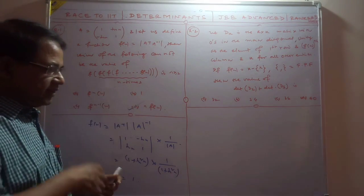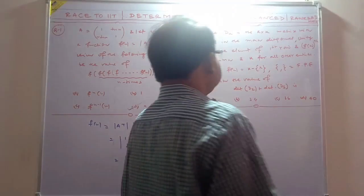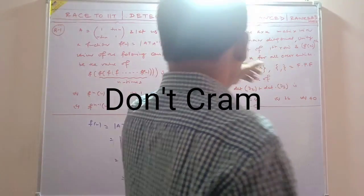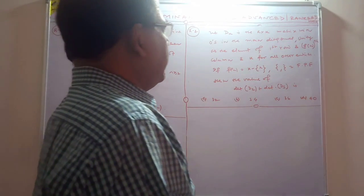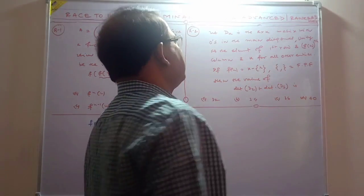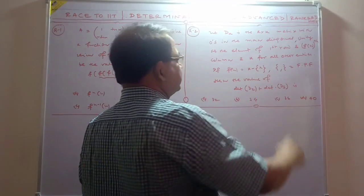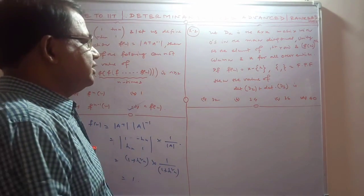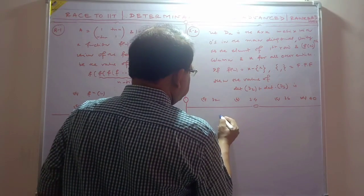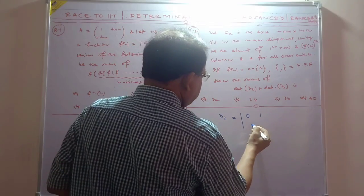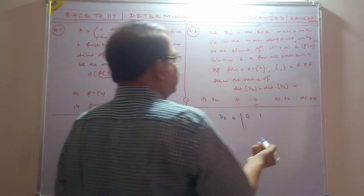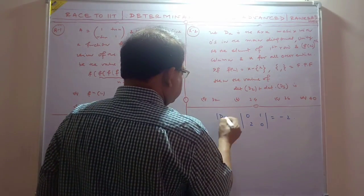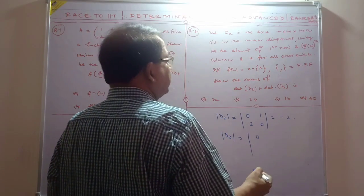Now the next problem: D_k is the k by k matrix with zeros in the main diagonal. The diagonal elements are zero, unity as the element of the first row and k-th column, and f(x) for all other entries, where f(x) equals x minus the fractional part of x. We need to find the value of d2 plus d3. For d2, the determinant gives minus 2, and for d3, we compute the determinant of the 3x3 matrix.